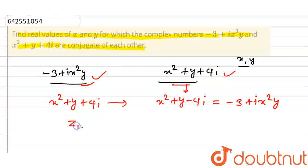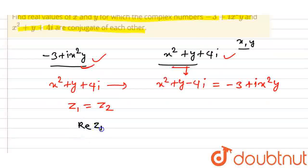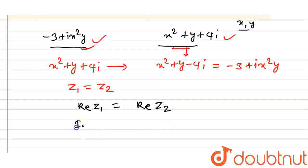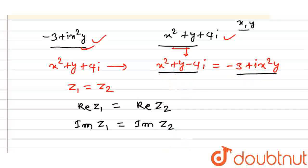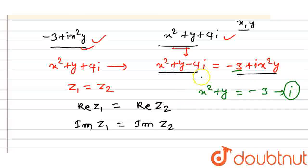We know that if two complex numbers z1 and z2 are equal, then the real part of z1 equals the real part of z2, and the imaginary part of z1 equals the imaginary part of z2. So the real part gives us x squared plus y equals minus 3 — call this equation 1. The imaginary part gives us minus 4 equals x squared times y — call this equation 2.